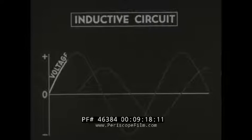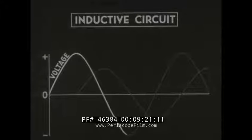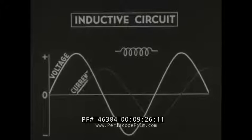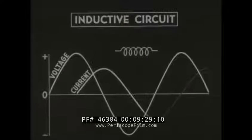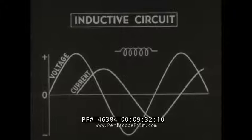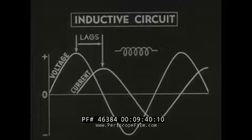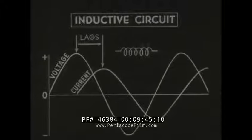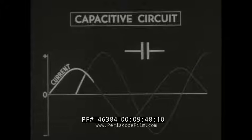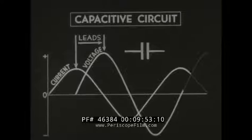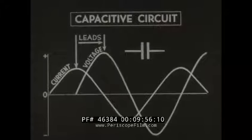The normal sine wave, representing a voltage applied across an inductance, will be of the type shown in this graph. The current through an inductance of negligible resistance can also be pictured as a sine wave. Since the current in an inductance lags the voltage producing it, the current sine wave reaches its peak values later than the voltage sine wave. In a capacitive circuit, the voltage and current can be pictured as sine waves, but in this case the current leads the voltage.